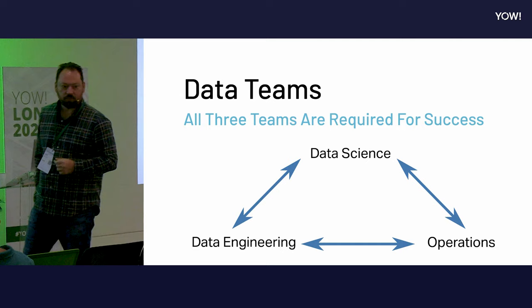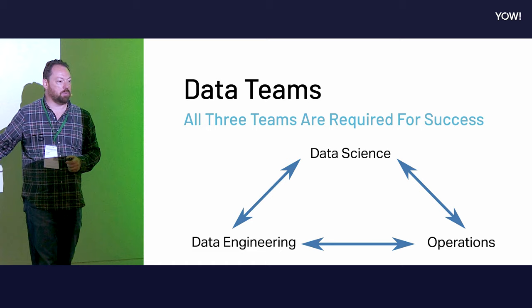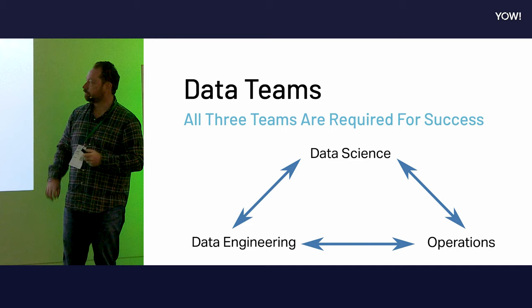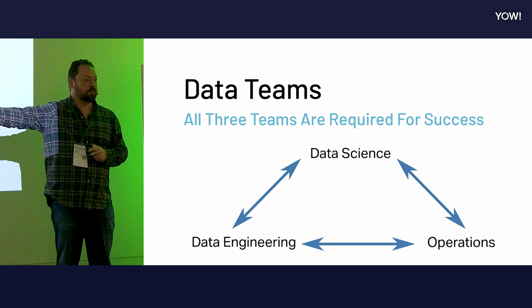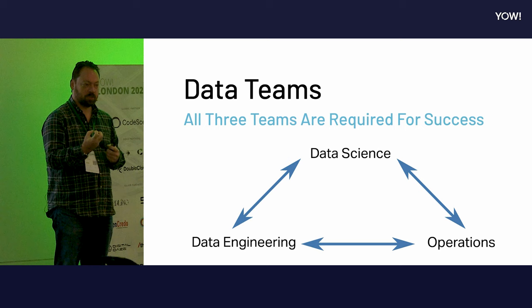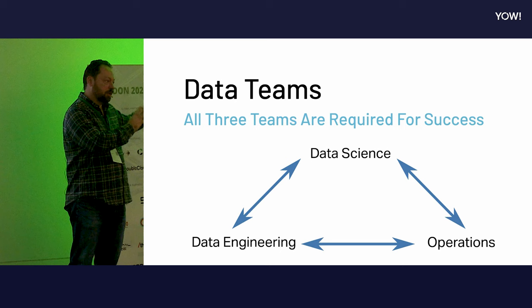Companies sometimes ask: what is the most important team, what is that one person I need? That's a big problem — there isn't just one person. You actually need three teams: data science, data engineering, and operations. Each one is not more important than the others; each is required. If you're missing data engineering, your engineering work is never done correctly. And if you're missing data science, why are you doing data at all if you aren't applying the most advanced methods?